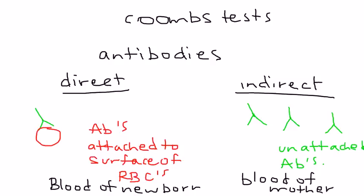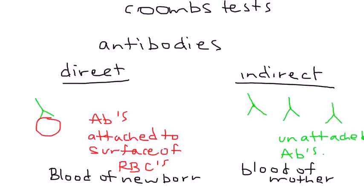Use indirect to test the mother's blood, use direct to test the newborn. Which antibody, which immunoglobulin? There's several different types: IgG, IgM. In particular, we're talking about IgG, so please remember that.